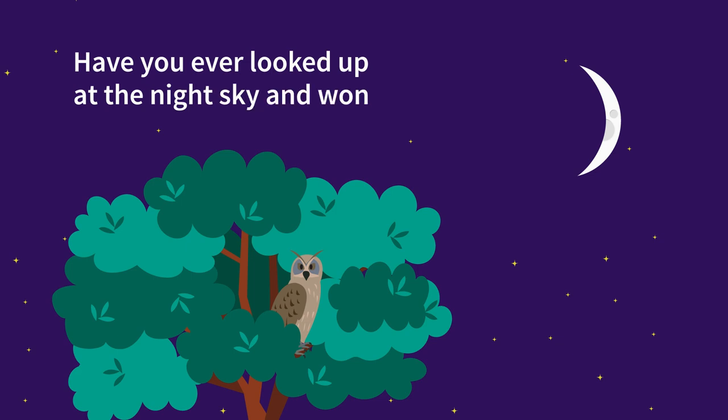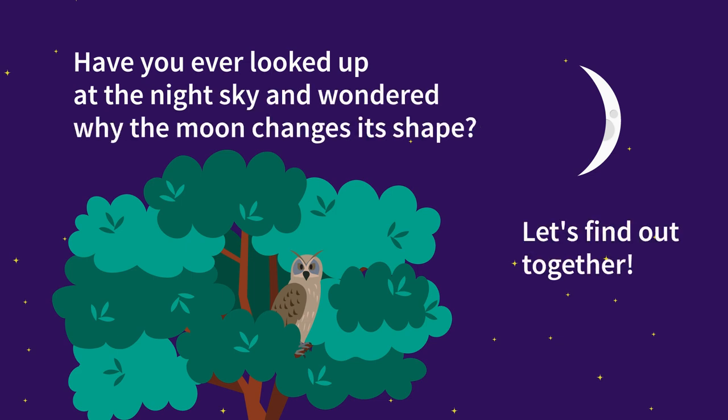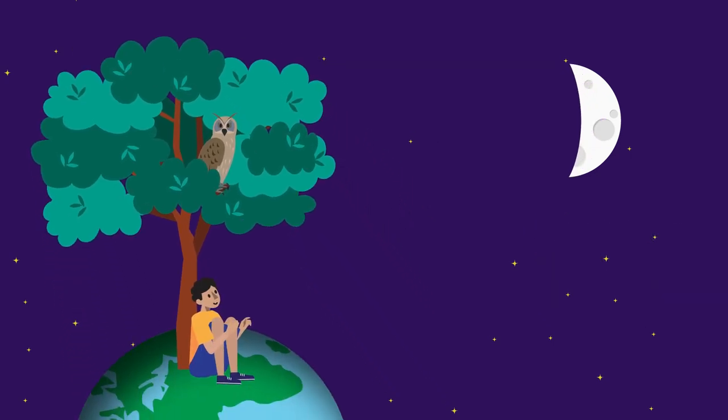Have you ever looked up at the night sky and wondered why the moon changes its shape? Let's find out together. The shape of the moon seems to change because from Earth we can only see the part of the moon